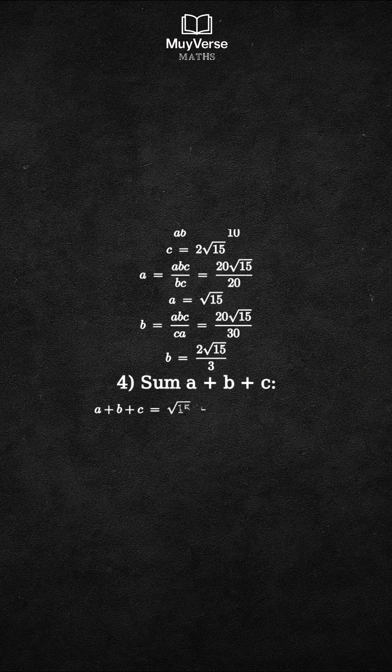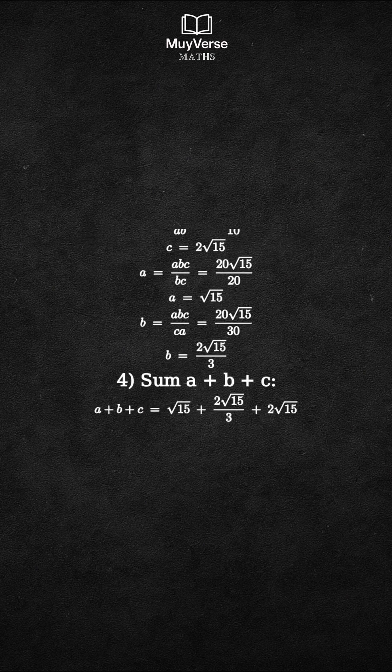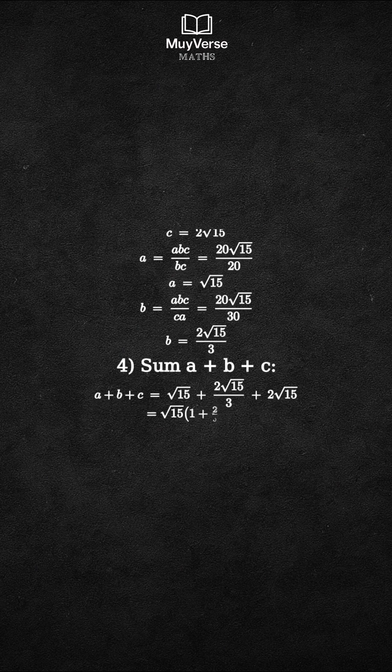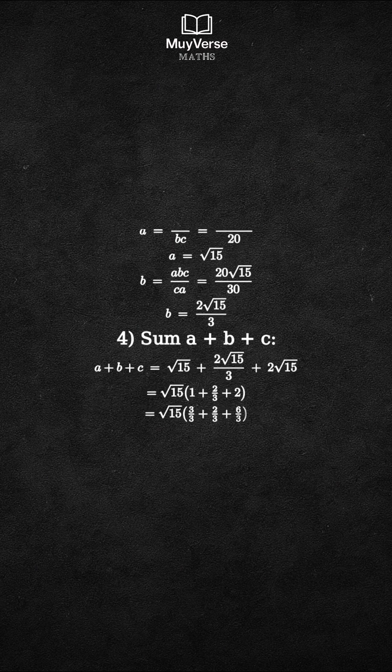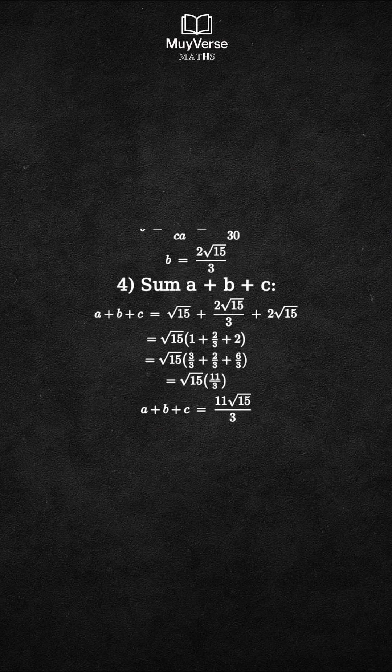Step 4. Now sum a plus b plus c. Substitute the values we found. A equals square root 15, b equals 2 square root 15 over 3, and c equals 2 square root 15. Factor out square root 15. Inside the parentheses, we have 1 plus 2 thirds plus 2, combined to a common denominator 3.